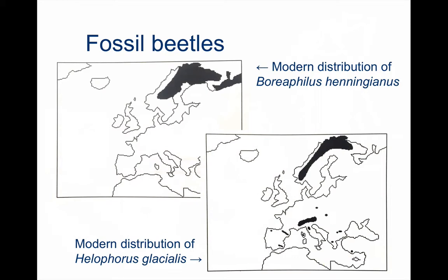What that allows us to do is apply uniformitarianism — to look at the current distribution of beetle species and compare that with where they're found in the fossil record. These two simple maps show the distribution of modern-day beetle species, both of which have been found in quaternary sediments in the UK, actually in the east of Scotland. This would clearly indicate that the climate when these particular beetles existed in Britain must have been significantly colder than it is today. We can actually define quite accurately the range of climates at which these species live, and therefore the climates that existed in Britain during the quaternary.